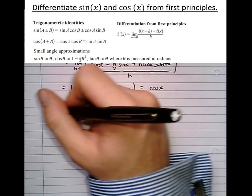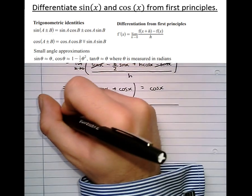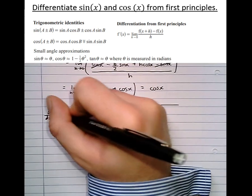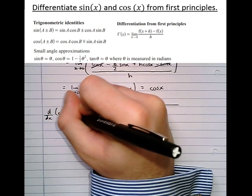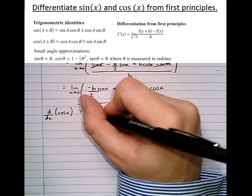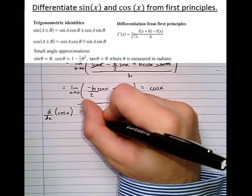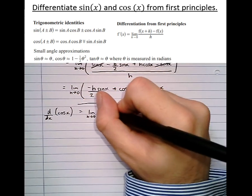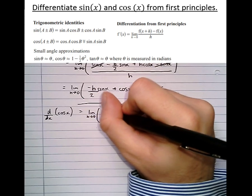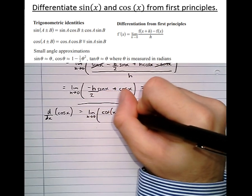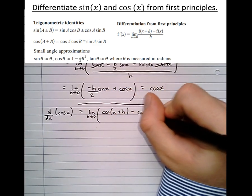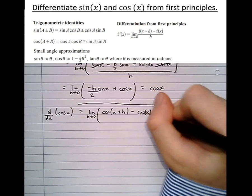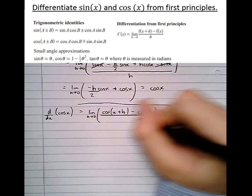Let's have a go now at differentiating cos x. So d/dx of cos x. Subbing into the differentiation from first principles formula, we have cos(x+h) take cos x, all over h.